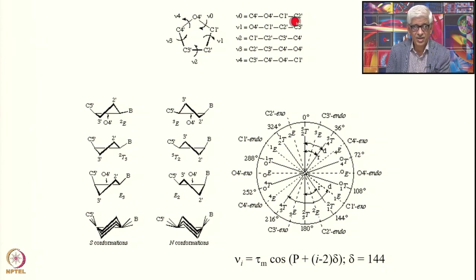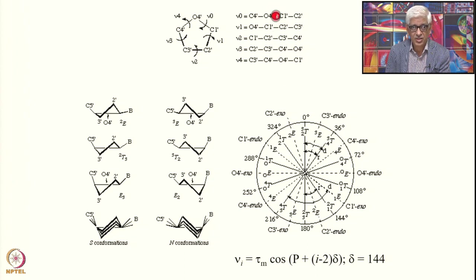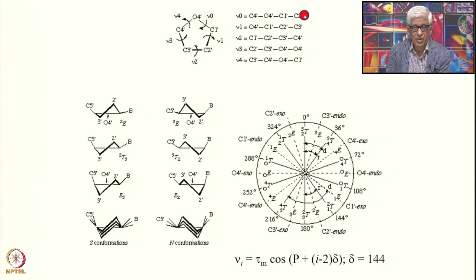The nu0 torsion angle is defined as the rotation angle around this bond, which defines the relative positions of C4' and C2'. The atoms are C4', O4', C1', C2', and the rotation is around the central bond. These are also called dihedral angles because they define the angle between two planes formed by these groups — C4', O4', C1' form one plane, and O4', C1', C2' form another plane.